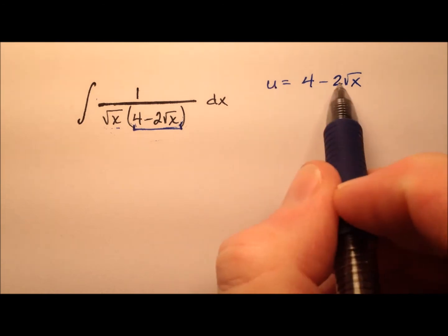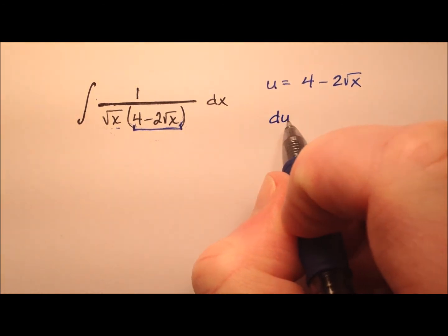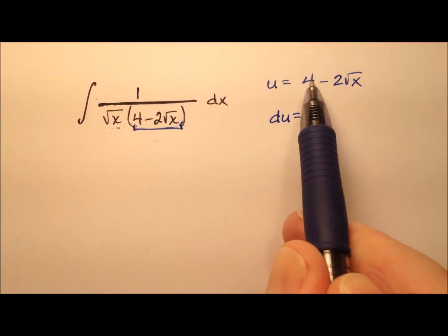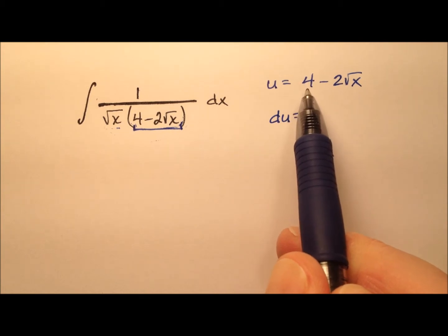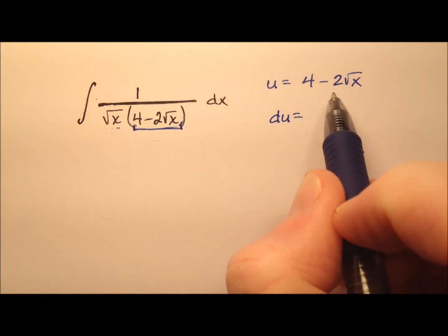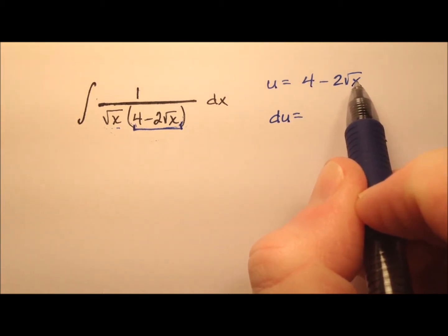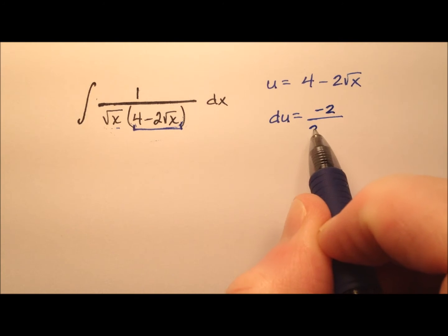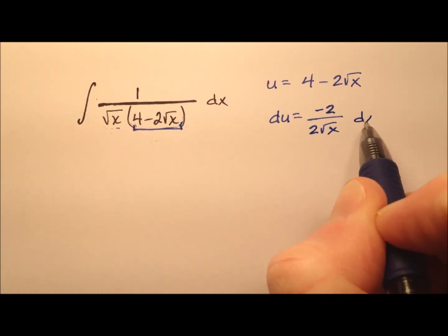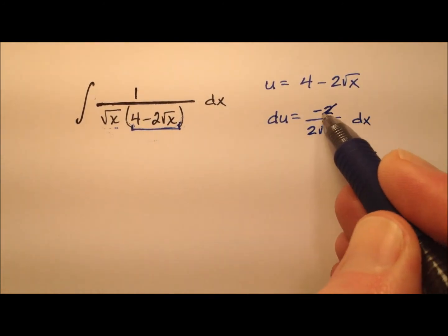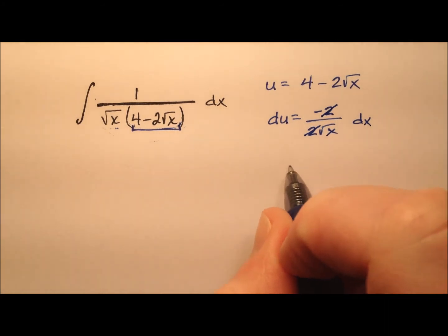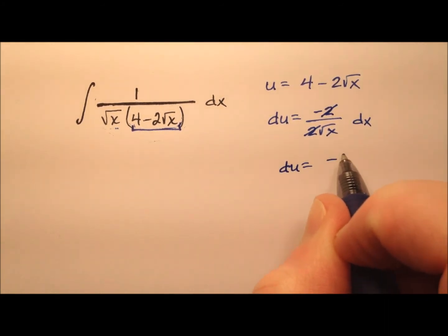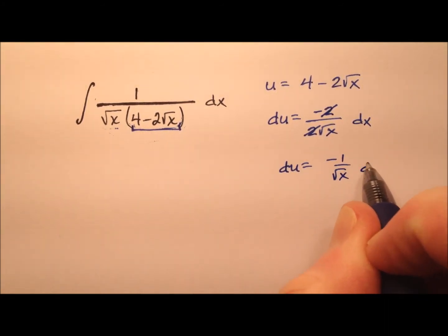Differentiating both sides gives me du equals, and the derivative of 4, of course it's a constant, so it goes away. The derivative of the square root of x is 1 over twice the square root of x, but we have this negative 2 right there. So it'll look like this dx, and those 2's will cancel nicely. So du equals negative 1 over the square root of x dx.